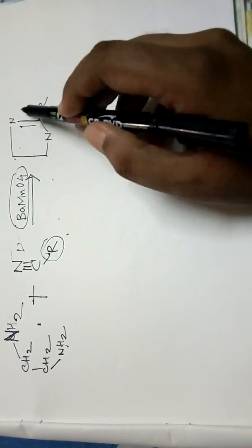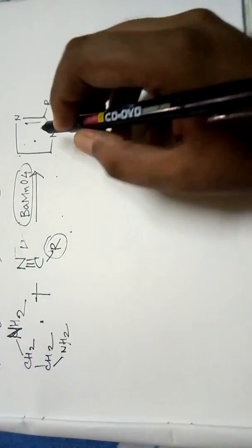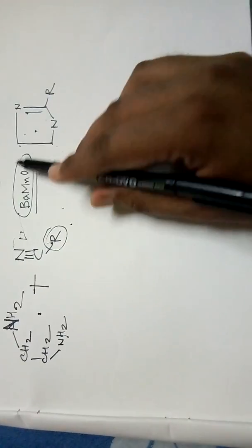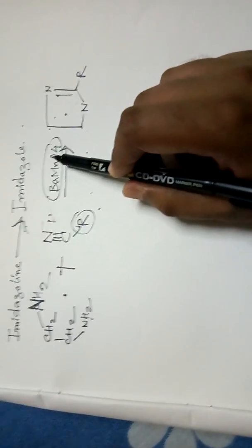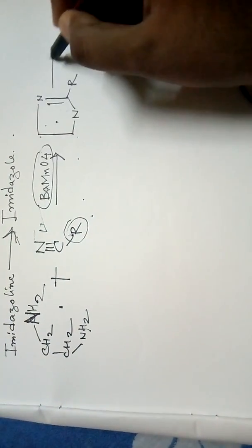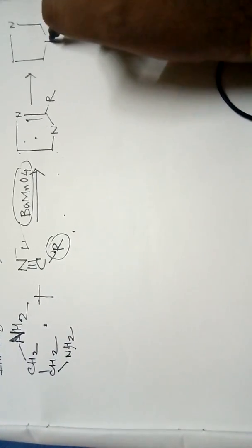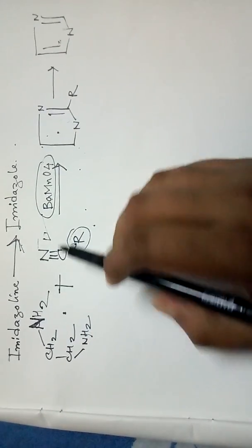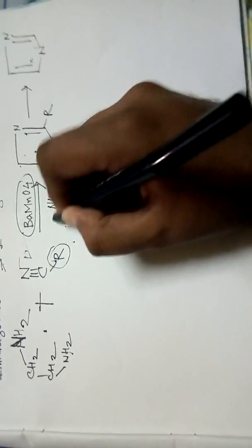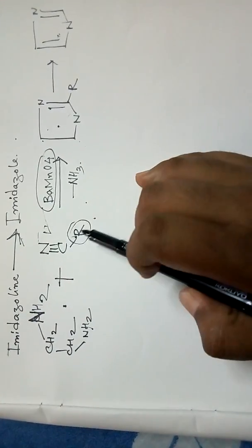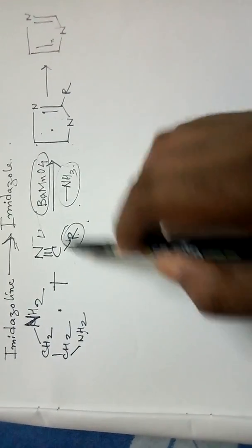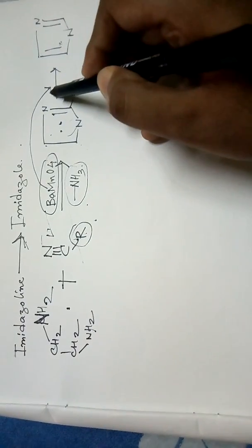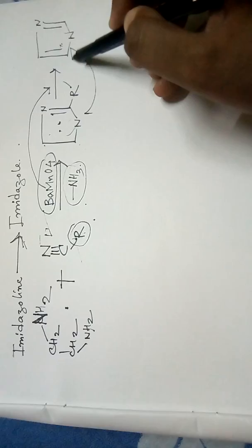The ring formed is imidazoline — which is like imidazole but has a saturated double bond at the four-five position. In the presence of barium permanganate, imidazoline is then converted into imidazole. During the reaction of ethane diamine with alkyl nitrile, an ammonia molecule is eliminated, forming imidazoline, which is then oxidized to imidazole.